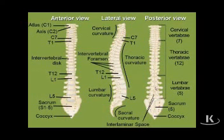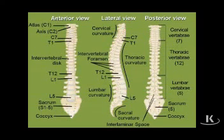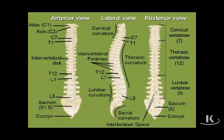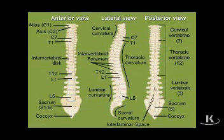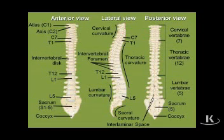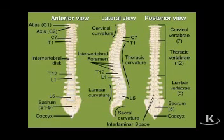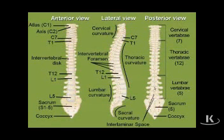The interlaminar spaces are clinically important because they serve as the pathway for lumbar puncture. Since the interlaminar space is the target through which we pass a needle into the vertebral canal, we want that target to be as large as possible. We can increase the size of an interlaminar space by placing the patient in a flexed position — flexing the vertebral column separates one lamina from the next, increasing the size of the interlaminar space. Therefore, lumbar puncture is performed in the posterior midline with the vertebral column flexed.